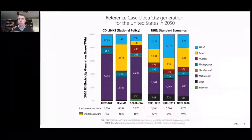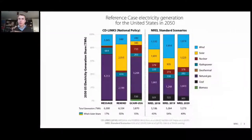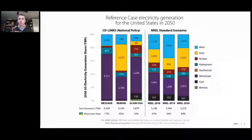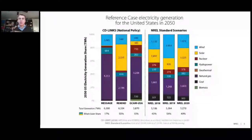Even if you look at the NREL results in isolation, we notice changes year over year in our modeling. Things like technology costs, fuel prices, and demand can drive some of these changes. Each year we're making improvements to how we parameterize RE integration. Recent developments in battery storage modeling could support PV deployment, as you would see in the 2020 NREL modeling, which has the highest amount of PV.